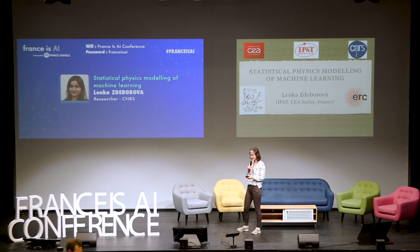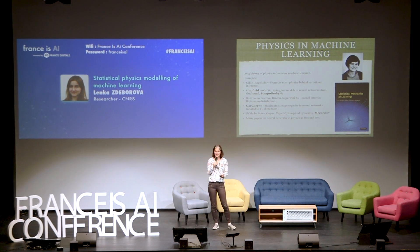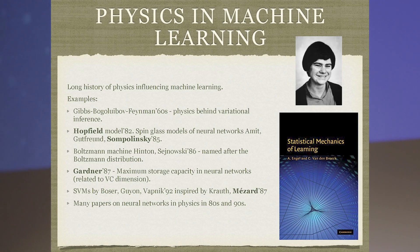You might be asking what does physics have to do with what we were talking about all day. To give you a little bit of history of how physics is related to machine learning: the variational mean field inference that some of you are using for statistical inference actually comes from physics, from what we would call the Gibbs-Bogoliubov-Feynman approach or variational methods. Something like the Hopfield model, which stands at the roots of some models in machine learning, also comes from physics and was also solved in physics.